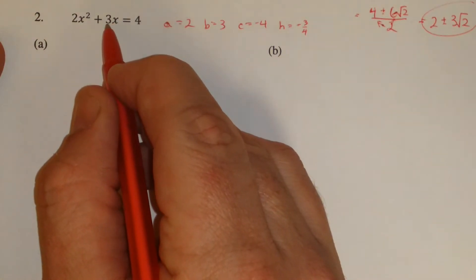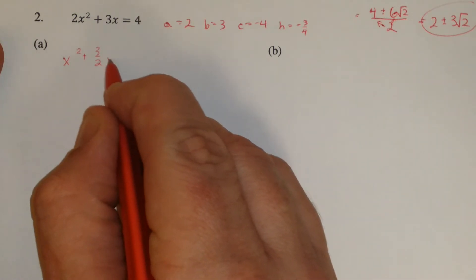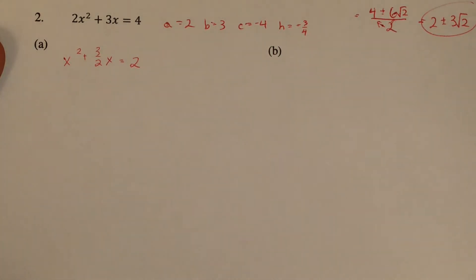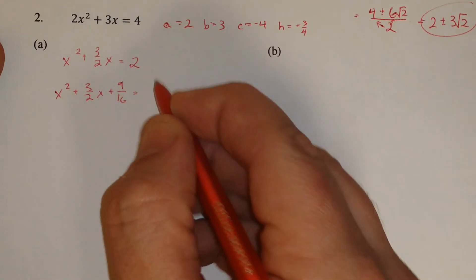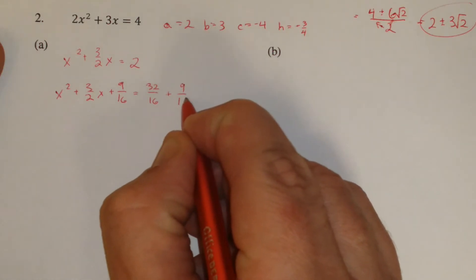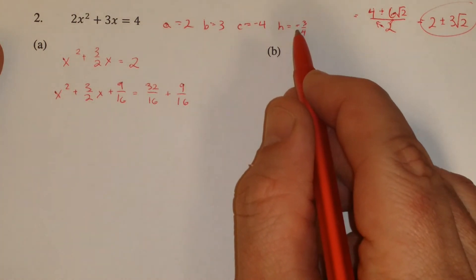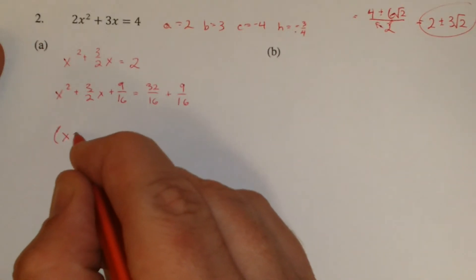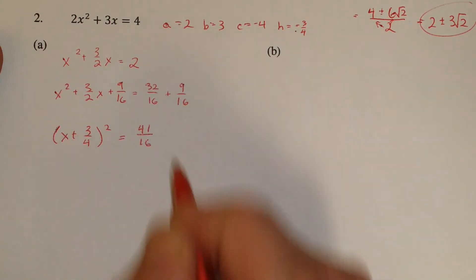So we've already sort of subtracted the c here, so now we're just going to divide by a. Now we add h squared, which would be 9 sixteenths to both sides. Now it'll be helpful to write 2 as a fraction over 16, so that's 32 sixteenths. So the left-hand side's now a perfect square. It's x minus h, so x plus three-fourths. And then this is 41 sixteenths.